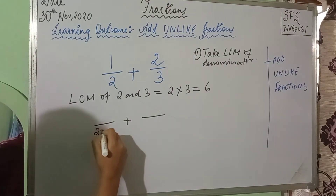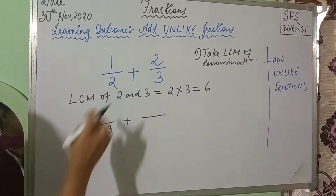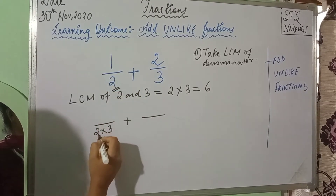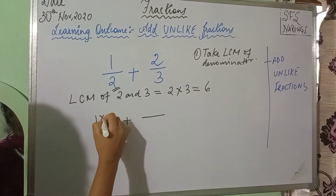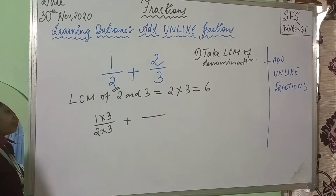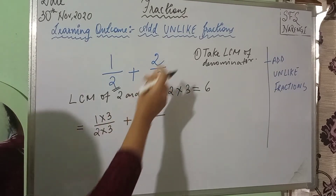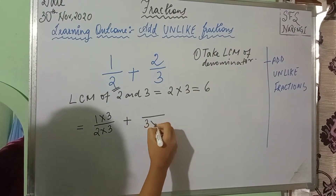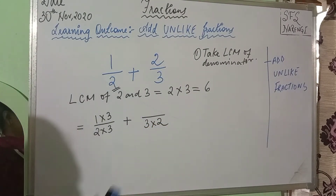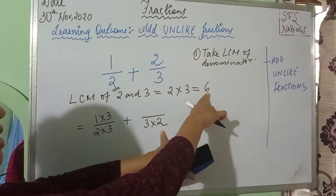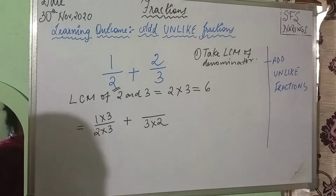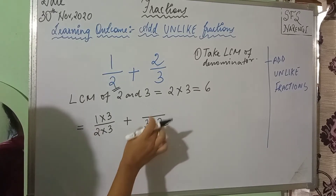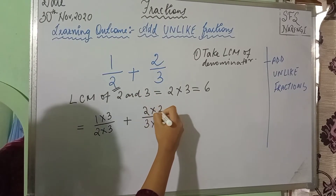Now, I will write 2 multiplied by 3 is 6. So, in the first fraction, I will multiply the denominator with 3. Since I am multiplying the denominator with 3, I will also multiply the numerator with 3. For the second fraction, I have 2 by 3. I will multiply the denominator with 2, because 2 multiplied by 3 is 6.